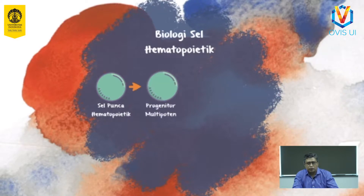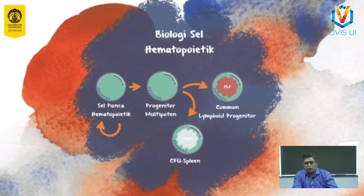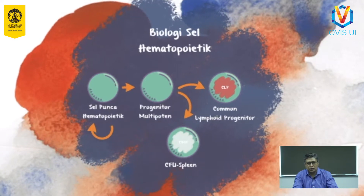Sel punca hematopoietik berdiferensiasi menjadi progenitor multipoten atau MPP, dan berdiferensiasi menjadi progenitor berkomitmen, yaitu colony forming unit spleen (CFU spleen) dan common lymphoid progenitor. Progenitor berkomitmen ini memiliki kemampuan berproliferasi dan diferensiasi sesuai galurnya untuk menjadi sel hematopoietik dewasa.